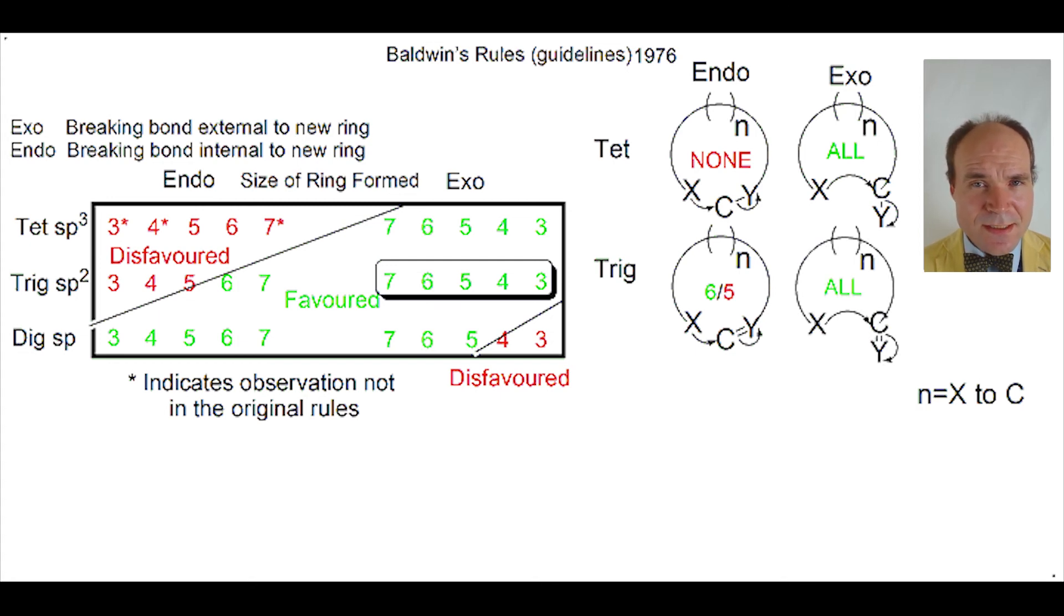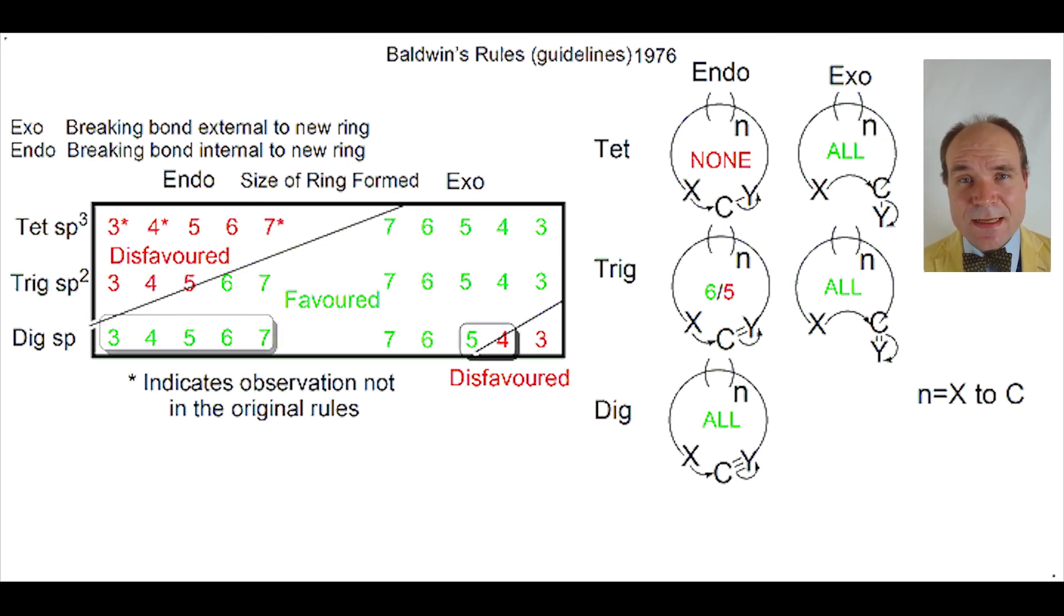Now let's consider dig. Dig endo is all favoured, but dig exo is partially favoured. Dig exo five-membered ring is favoured, whilst dig exo four-membered ring is unfavoured.